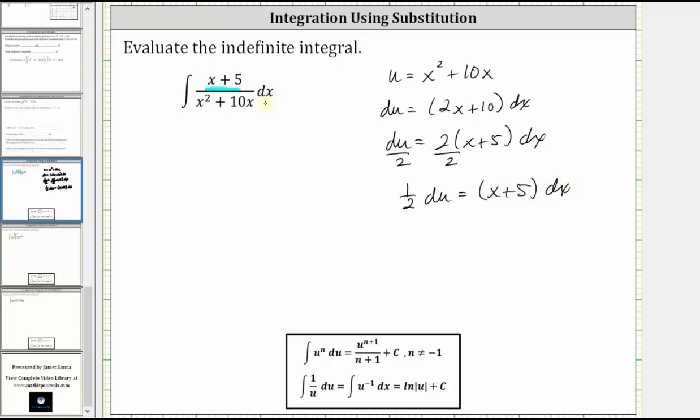So now we have the quantity x plus five dx is equal to one half du, and we started with x squared plus 10x is equal to u. So let's go ahead and write the given integral in terms of u.